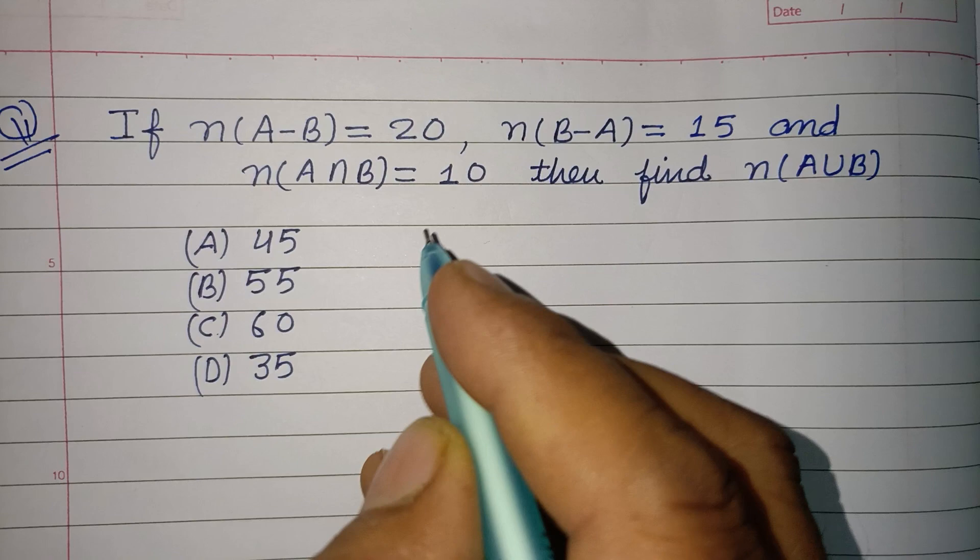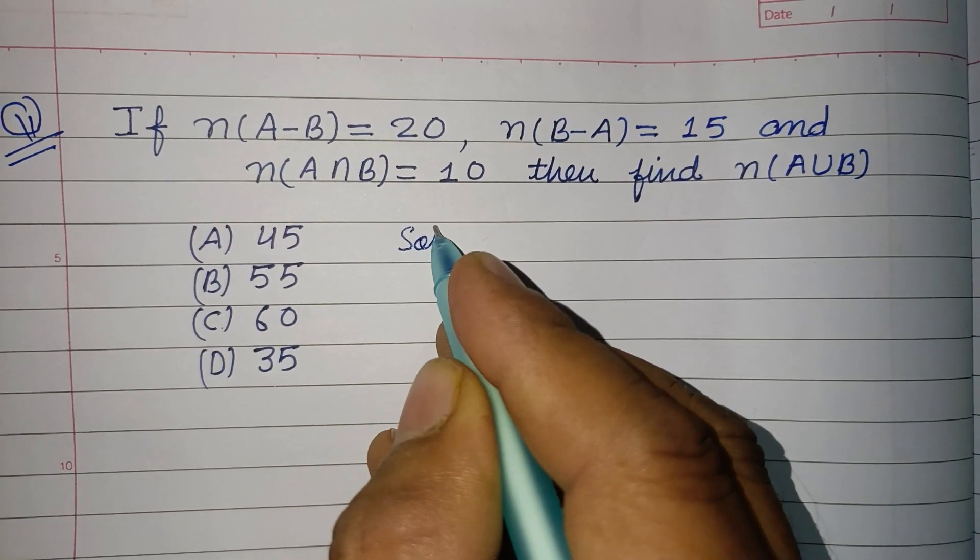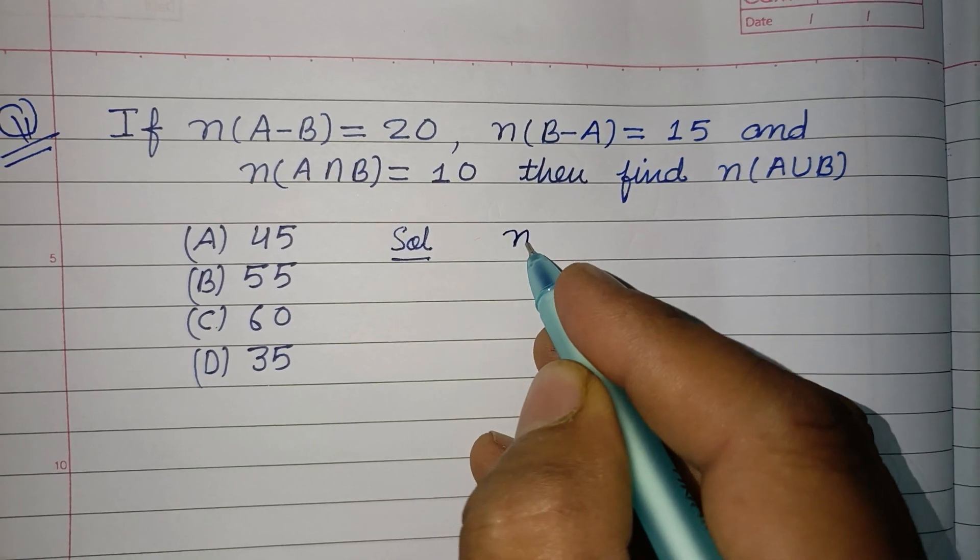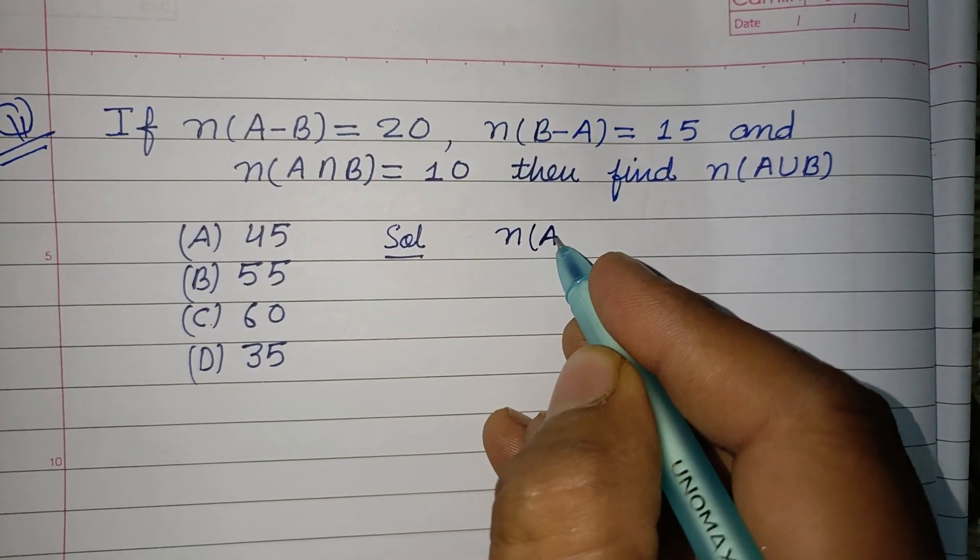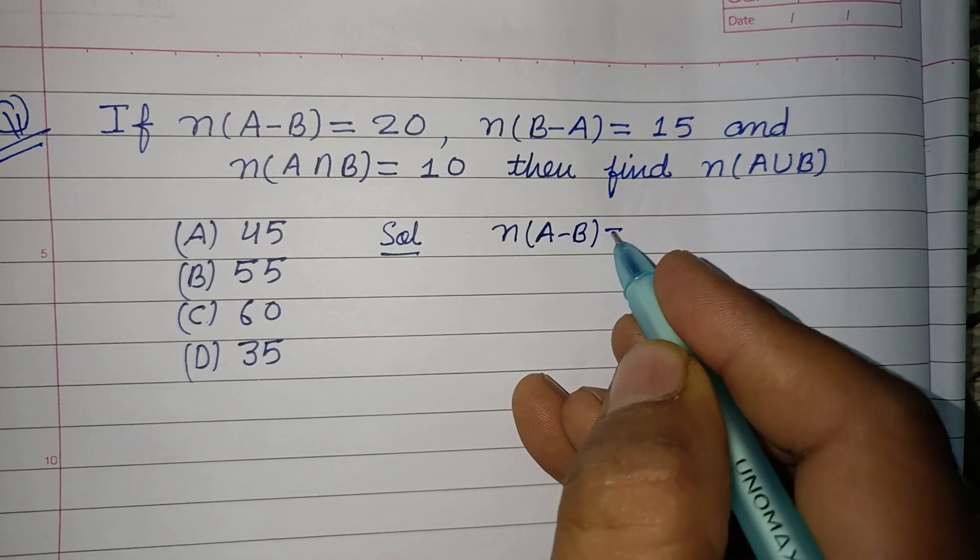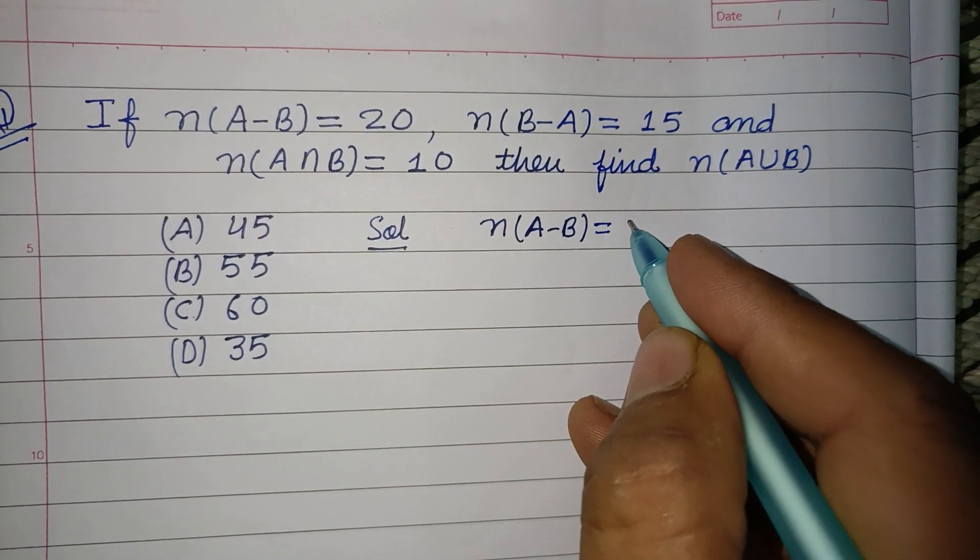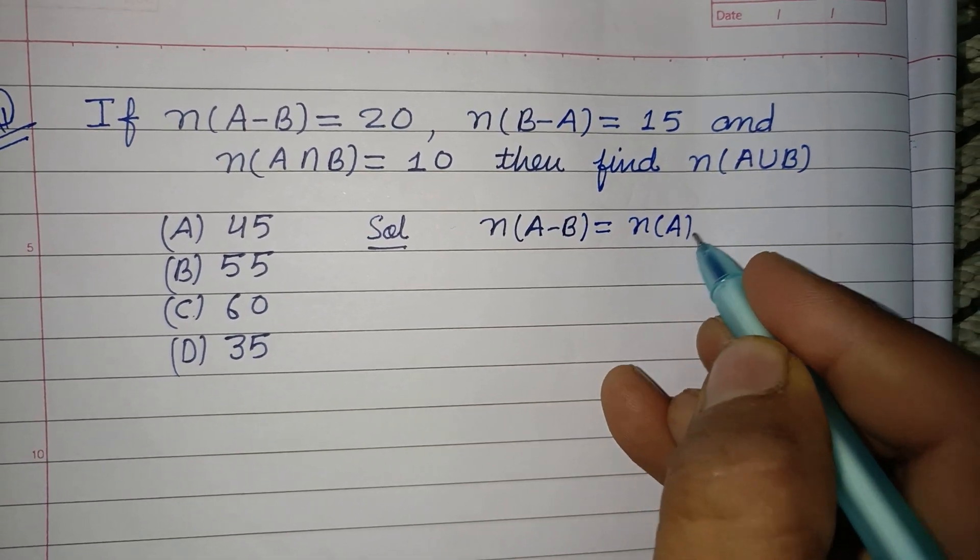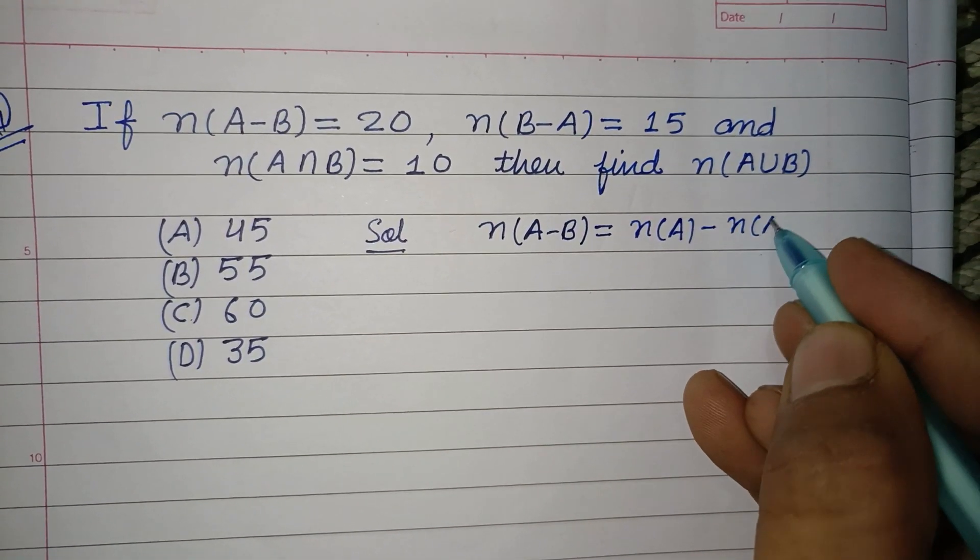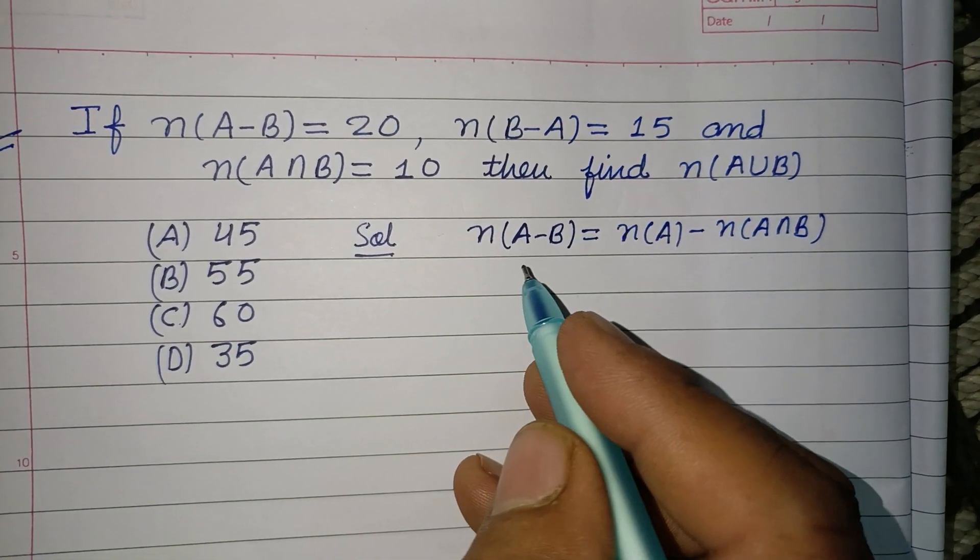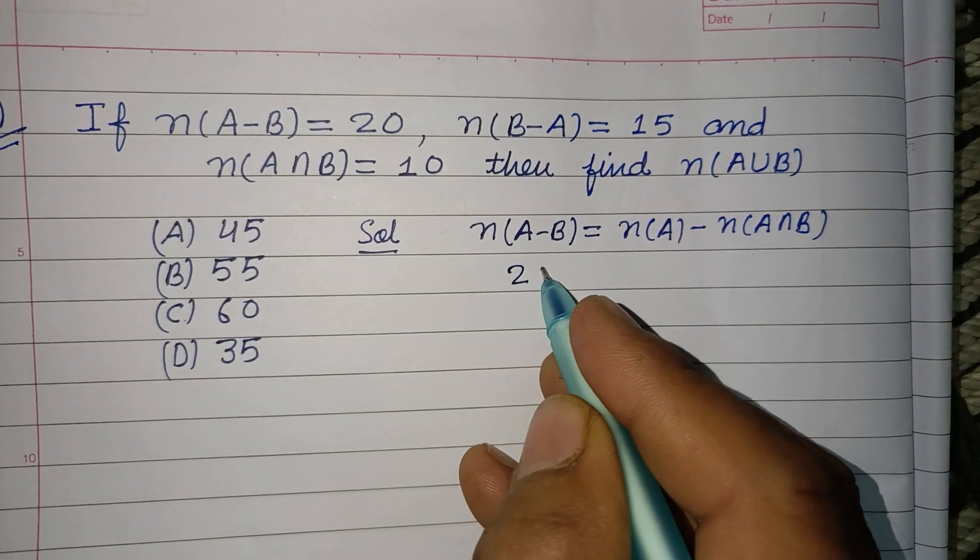Students, this question is mainly based on formulas. The subtraction of two sets, n(A-B), equals n(A) minus n(A∩B). From here we can easily get n(A). n(A-B) is given as 20, and n(A∩B) is given as 10. Therefore, bringing 10 to the other side...